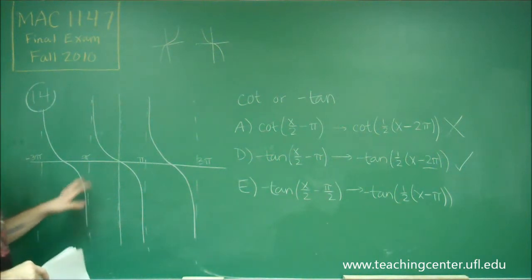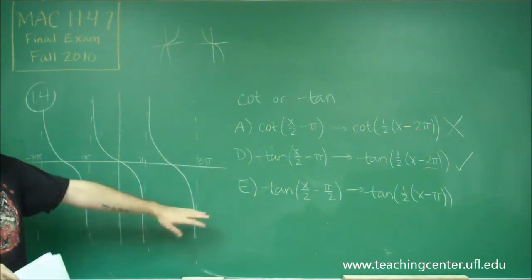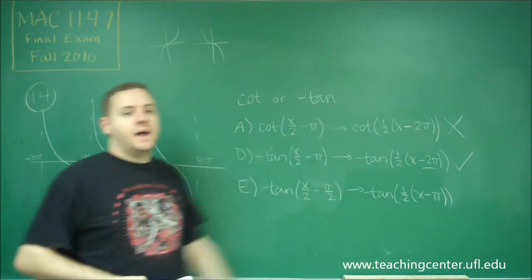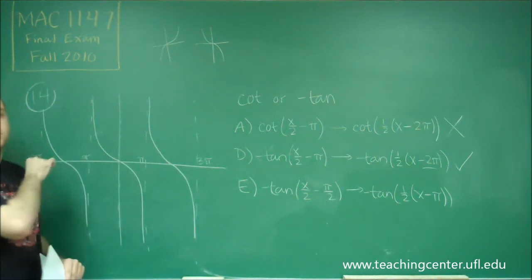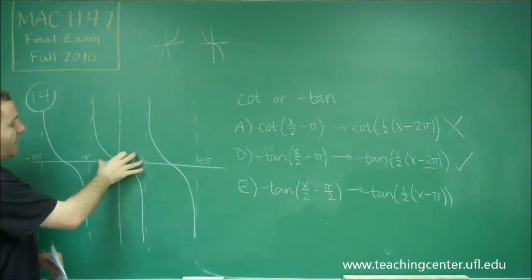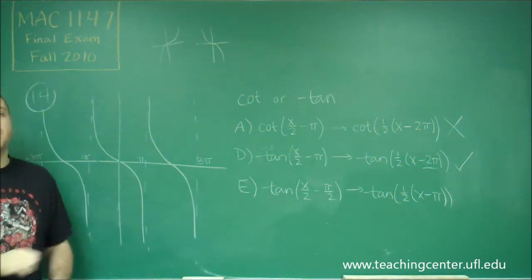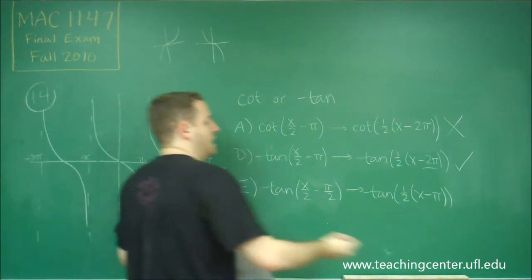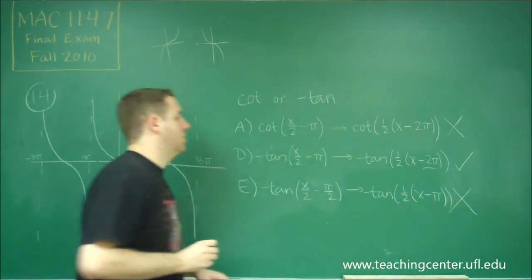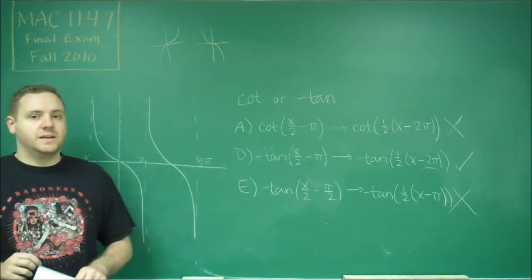Since our period is 2π, this is saying that we would shift it by π, and since tangent normally goes through the origin, if we shifted this only over by π, then we would have ended up having an asymptote in the middle. So that's why this one is also wrong. Our correct answer there is answer choice D.